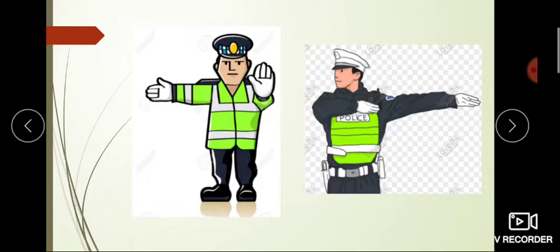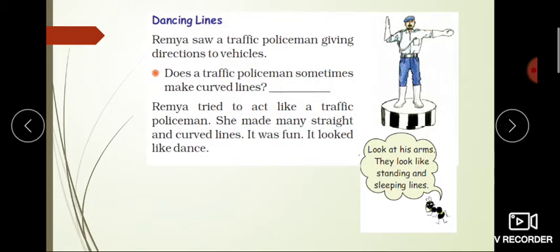You can see how the traffic policeman points out directions. Traffic policemen can use their hands to make different signs and symbols to direct traffic. Does a traffic policeman sometimes make curved lines? Yes - you can see in this picture his arms look like standing and sleeping lines.